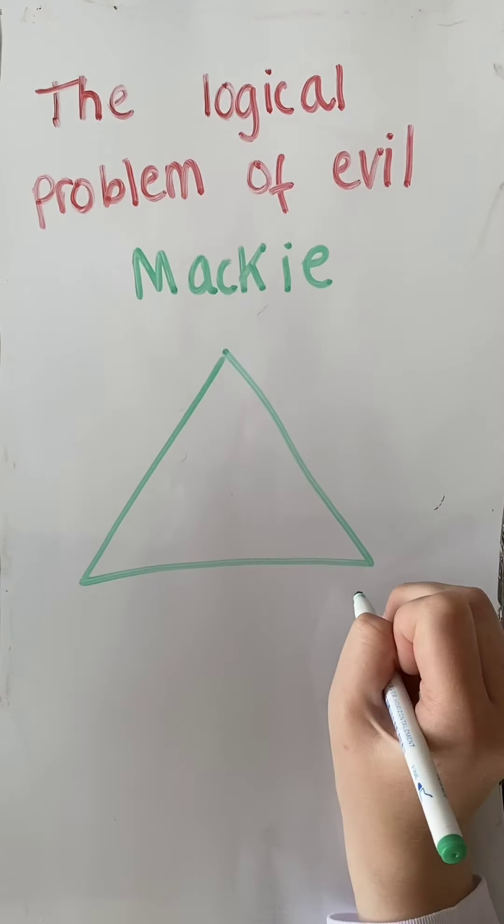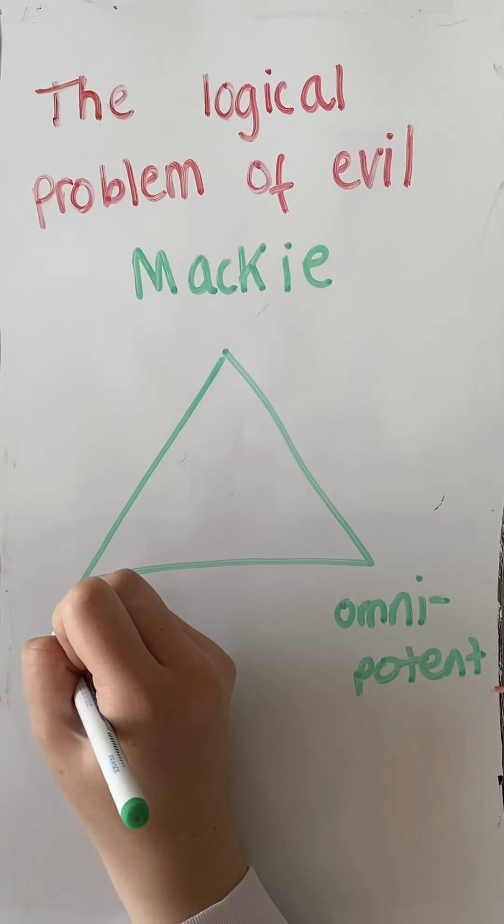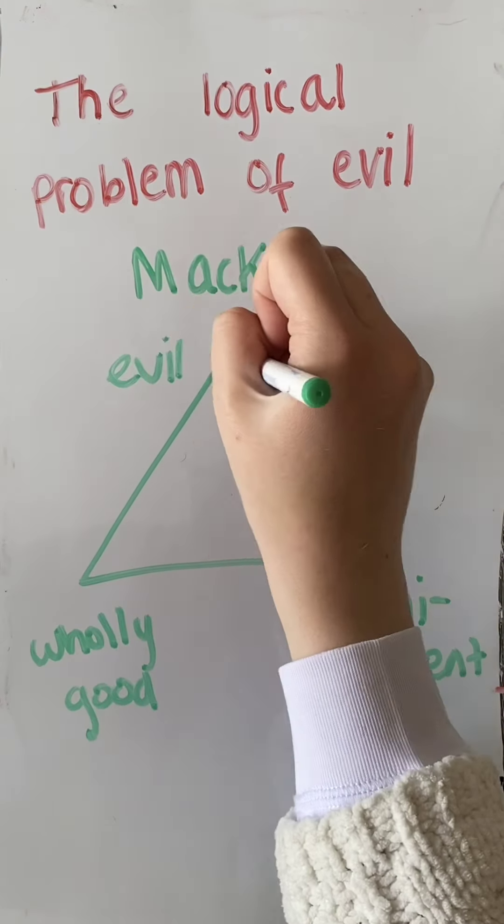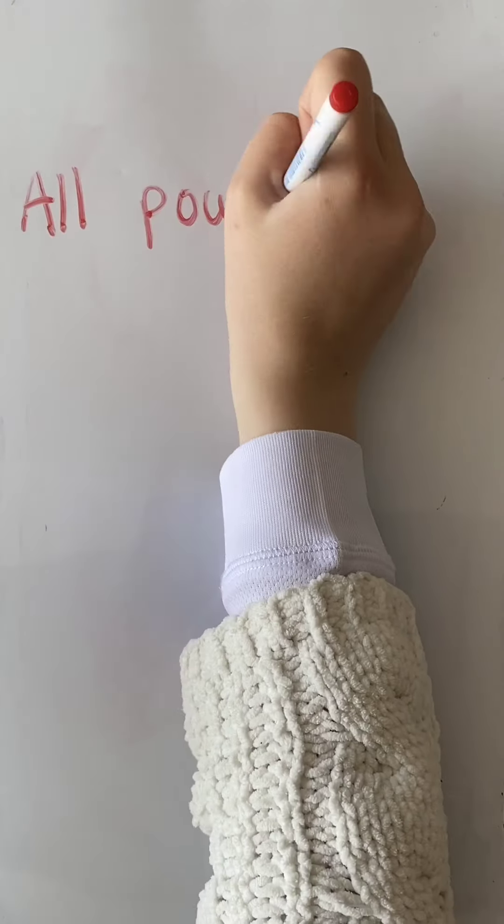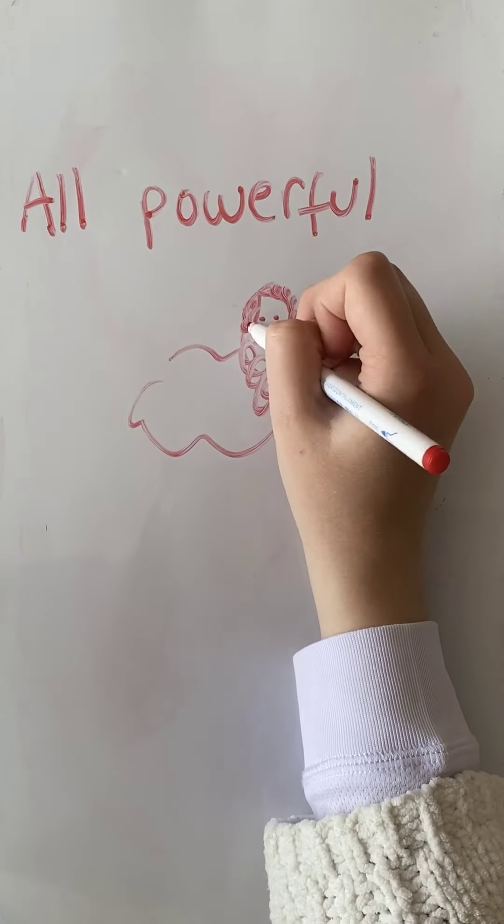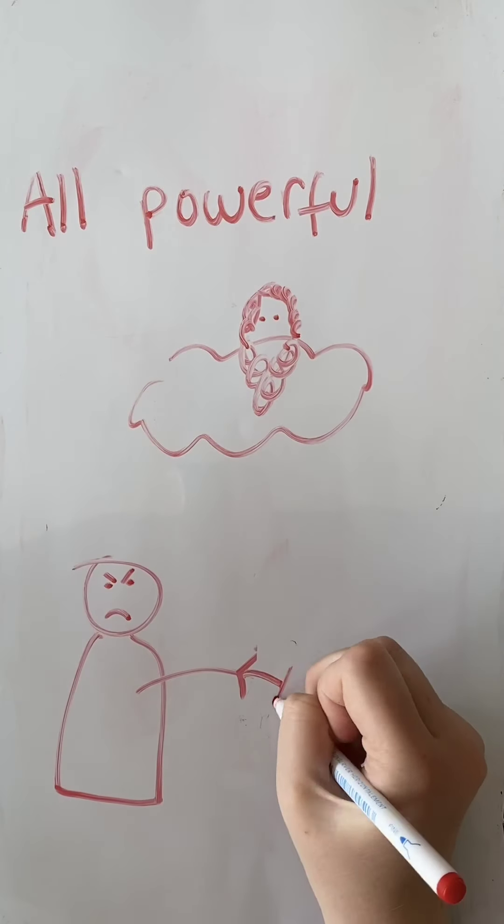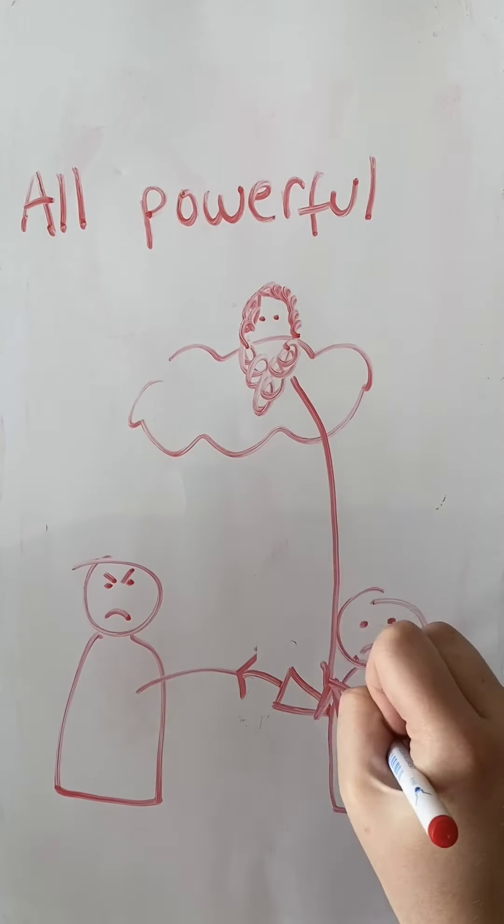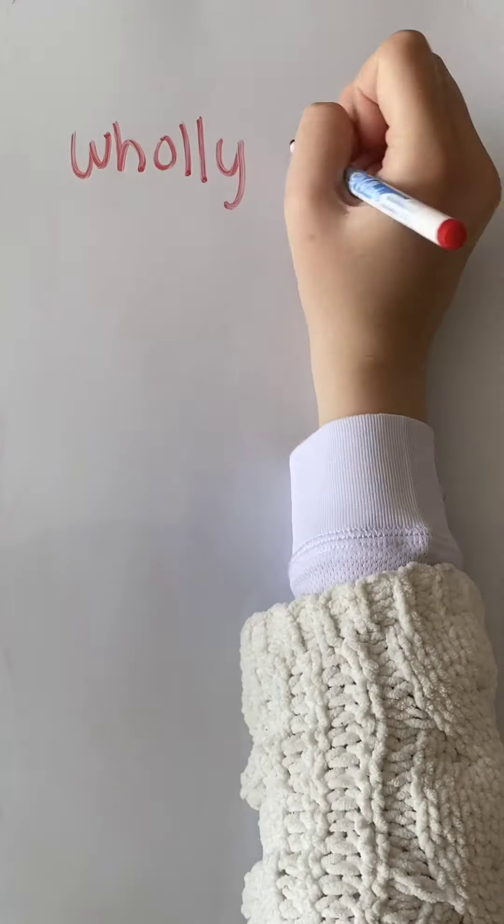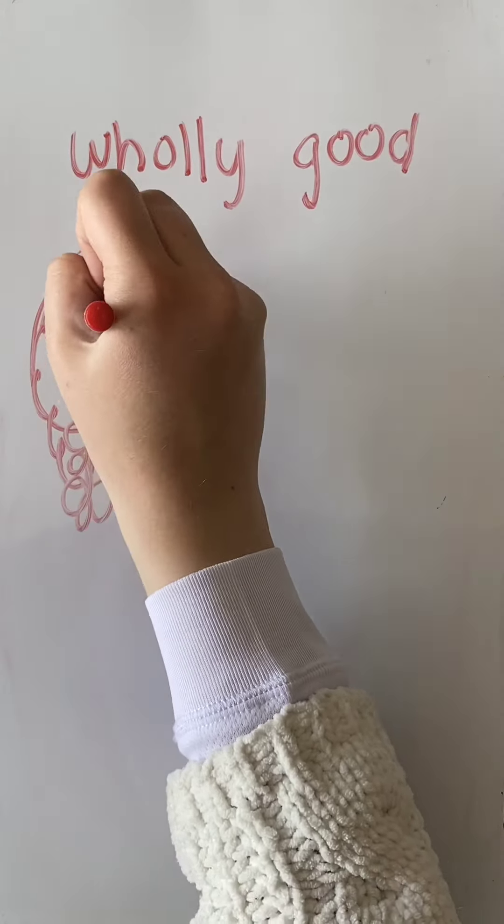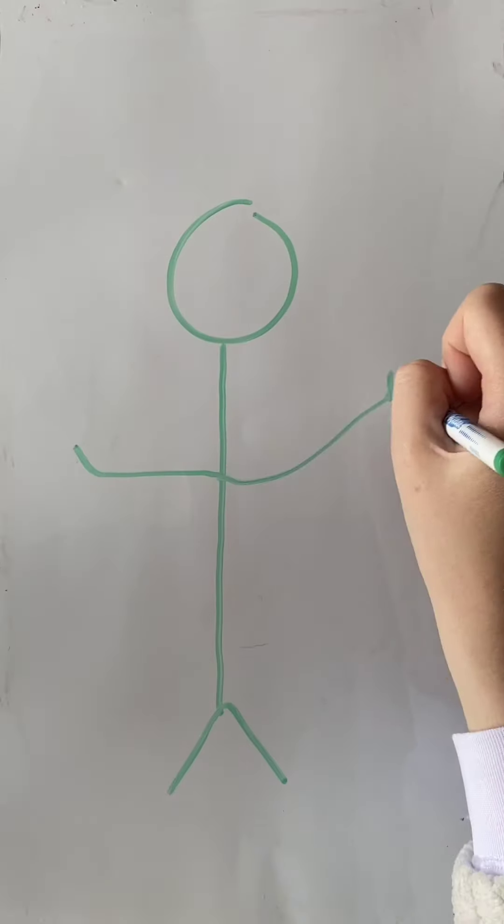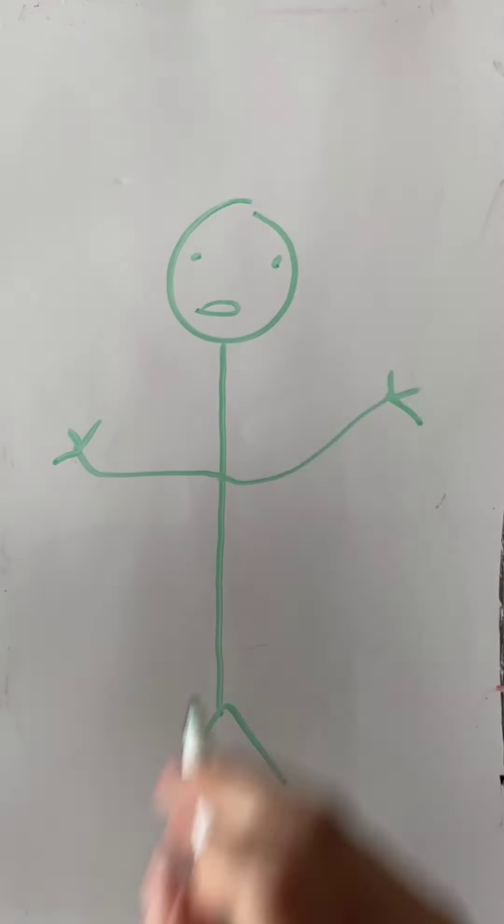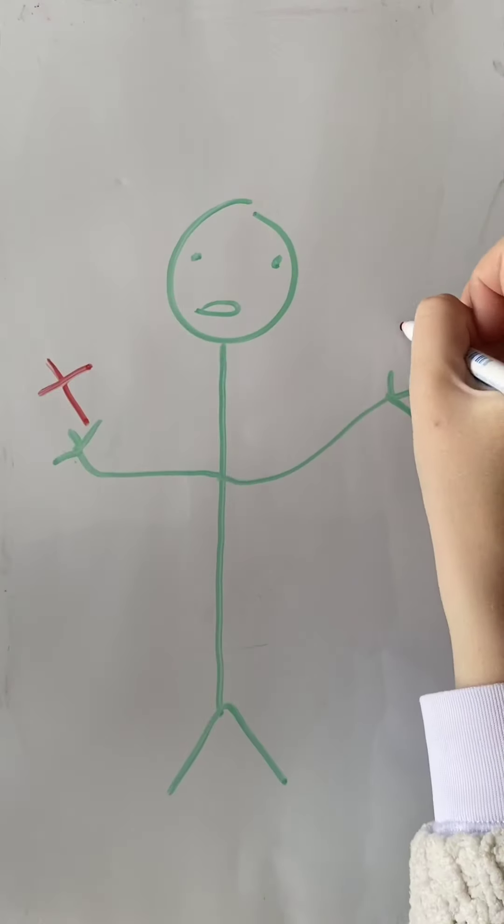Mackie shows this with his inconsistent triad, which explains that believers hold God's omnipotence, God's omnibenevolence, and the existence of evil to all be true. However, this is incoherent, as if God were omnipotent he would eliminate evil completely, and if he were supremely good he would want to eliminate evil. However, evil exists, which shows that an omnipotent and omnibenevolent God cannot exist. Therefore, Mackie argues that believers must either give up their belief in God or admit that they have an irrational and inconsistent belief in God.